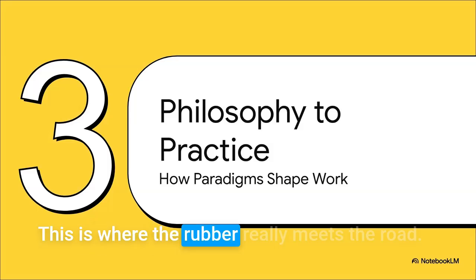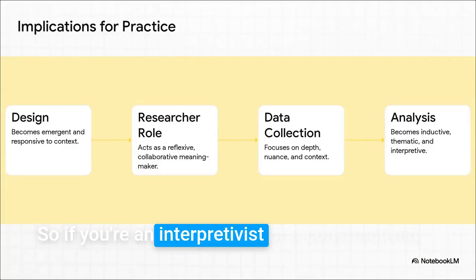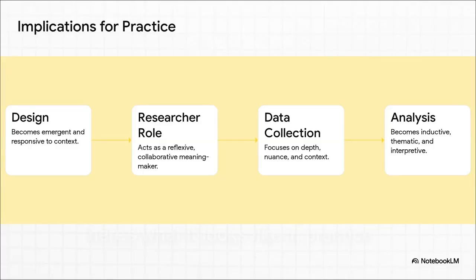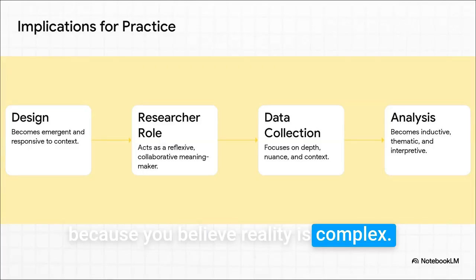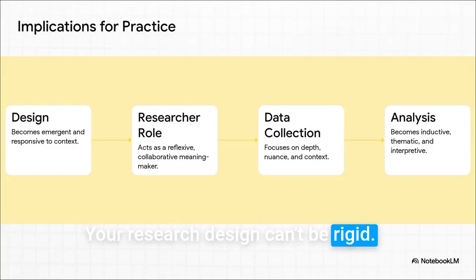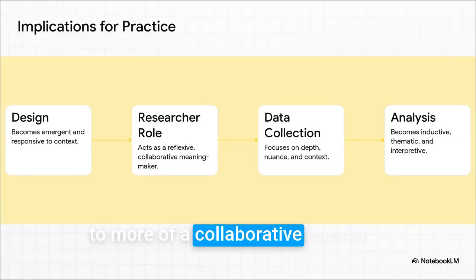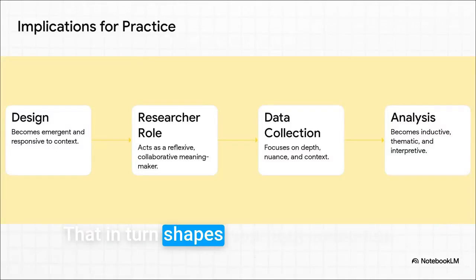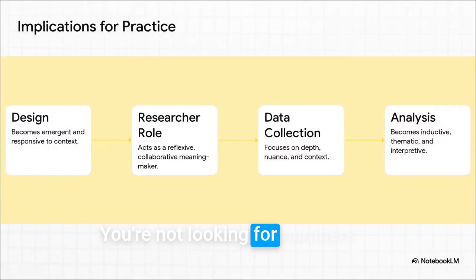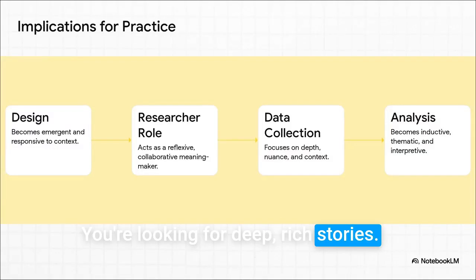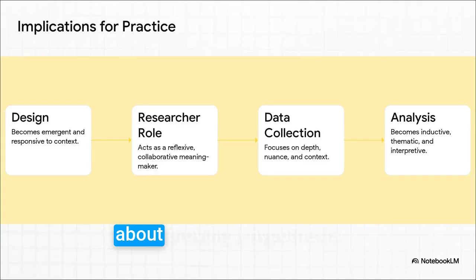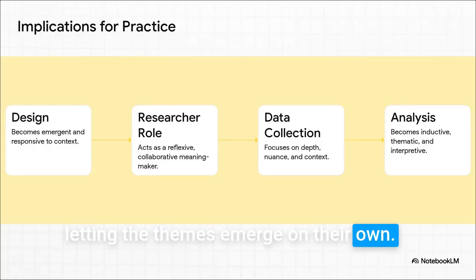If you're an interpretivist or a constructivist, here's what it looks like in practice. Because you believe reality is complex, your research design can't be rigid — it has to be flexible and evolve. This totally changes the researcher's role from some distant observer to more of a collaborative partner. That, in turn, shapes your data collection. You're not looking for numbers; you're looking for deep, rich stories. And your analysis isn't about proving a hypothesis — it's about listening to those stories and letting the themes emerge on their own.